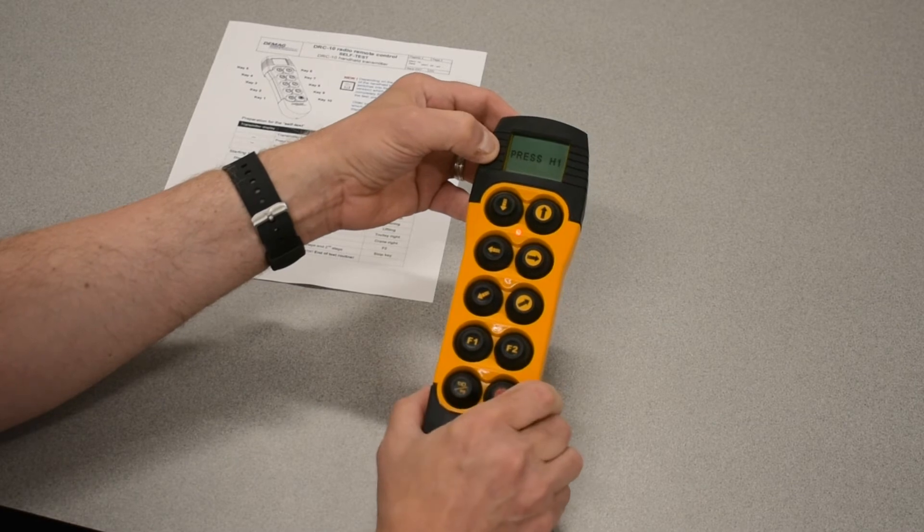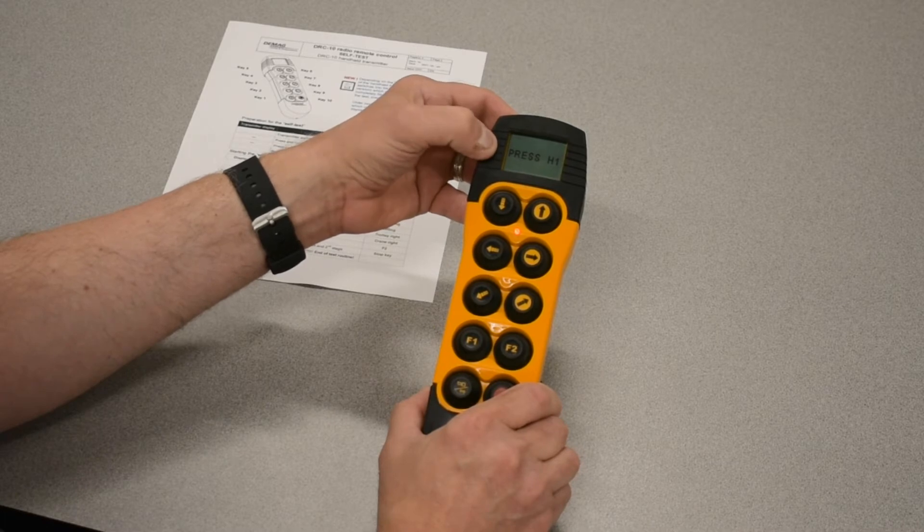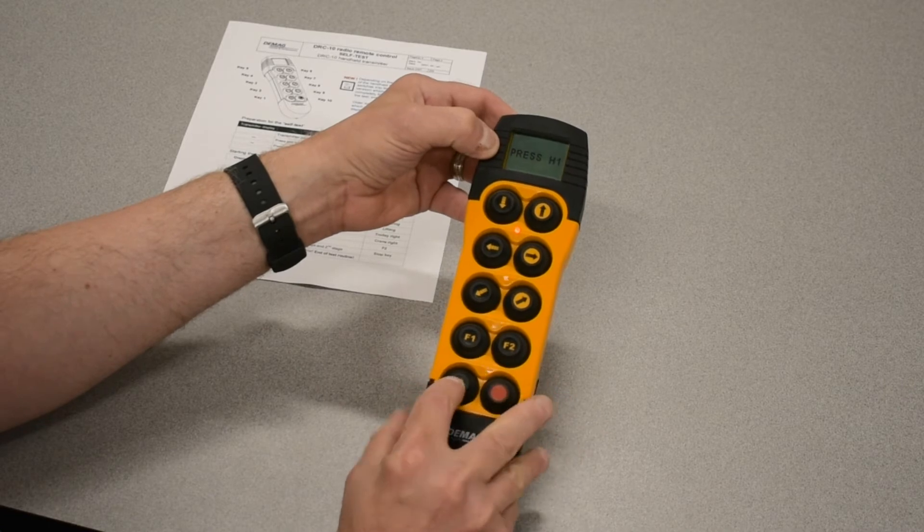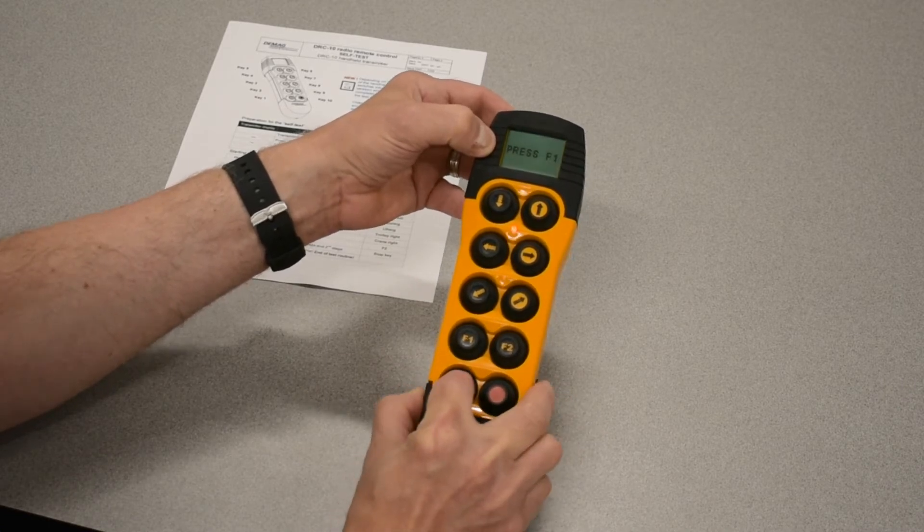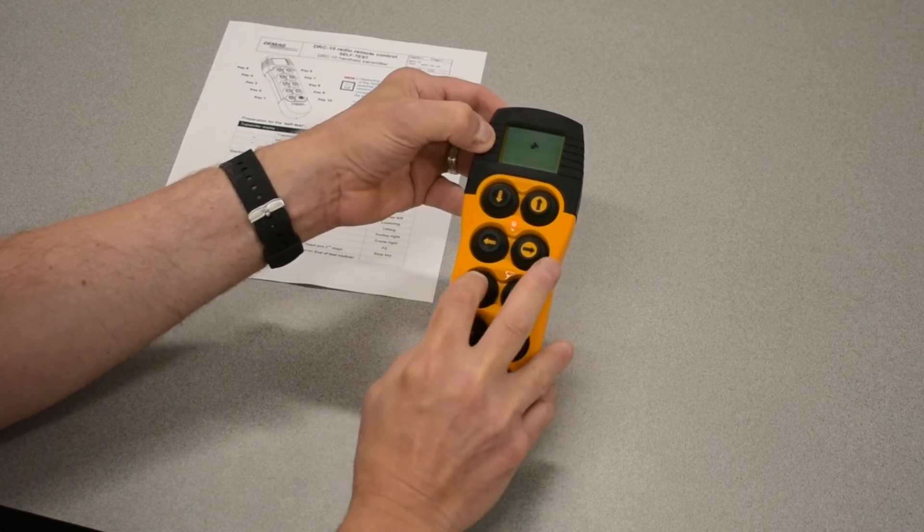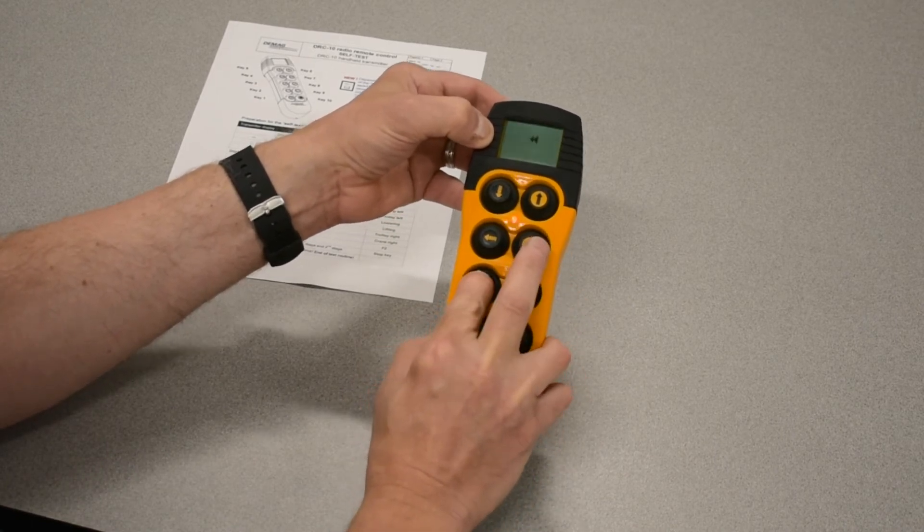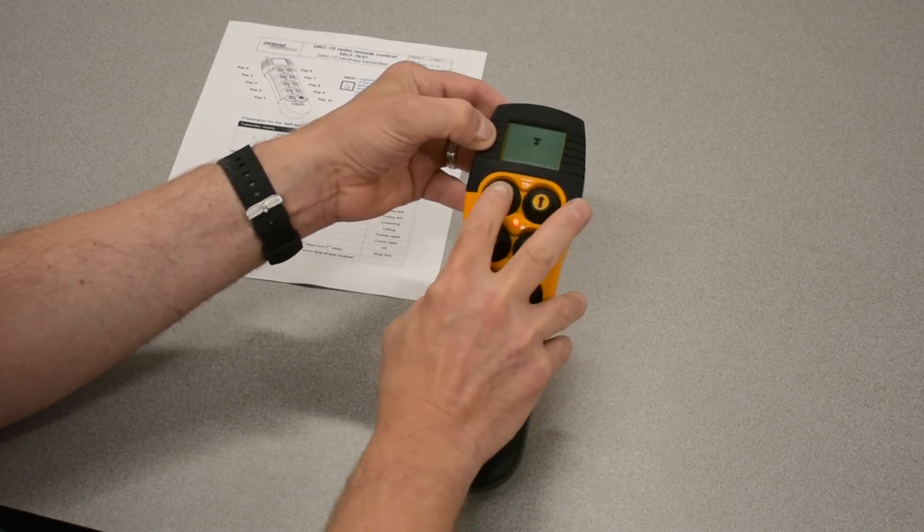press stop and it guides you as to which button to push in order. It says press H1 to the first step, that's the horn to the first step, then to the second step, then F1, then bridge, then trolley left, lower.